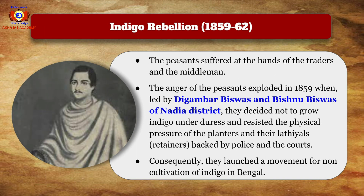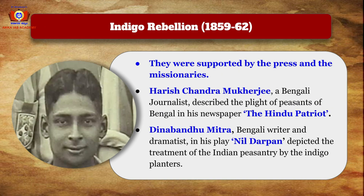The peasants suffered at the hands of traders and middlemen, and their anger exploded in 1859 when they were led by Digambar Biswas and Bishnu Biswas of Nadia district. They decided not to grow indigo and resisted the physical pressure of the planters and their lathials or retainers. Backed by the police and the courts, the peasants launched a movement for non-cultivation of indigo in Bengal.